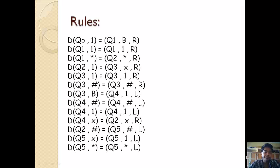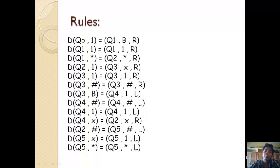The transition rules are as follows: Q0 on 1 goes to Q1, writes B, moves right. Q1 on 1 stays and moves right. On finding a star symbol, we change state to Q2 and move right. On finding a 1 in Q2 we change state to Q3 and move right. On finding a hash we move right. On finding a blank space we change state to Q4, put a 1 over the blank and move left. On finding a hash we move left. On finding a 1 we move left. Once we find the first X symbol, we change state to Q2 and move right. On finding a hash we change to state Q5 and move left. This is repeated again and again.